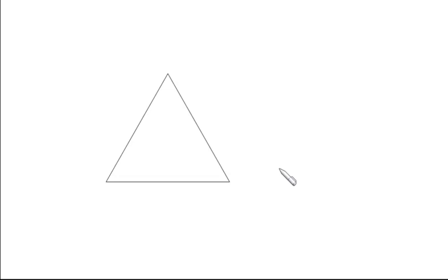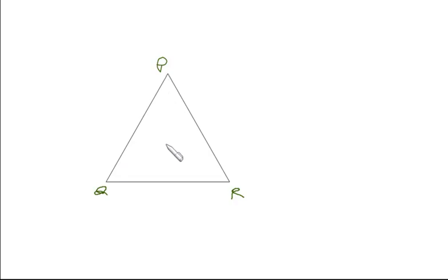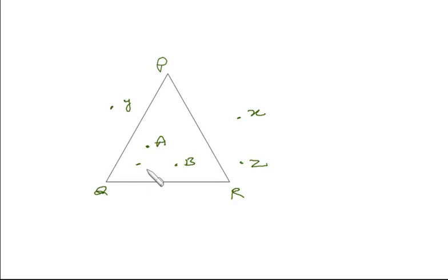Now let's discuss points and regions inside and outside the triangle. The region within the triangle is the interior region. Suppose this triangle is P, Q, R — then we see a triangular boundary. The region inside is the interior region, and the region outside is the exterior region. Suppose we have some points: A, B, C are points lying in the interior region of the triangle, and X, Y, Z are points lying in the exterior region.